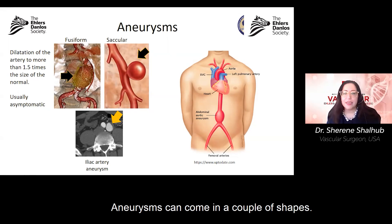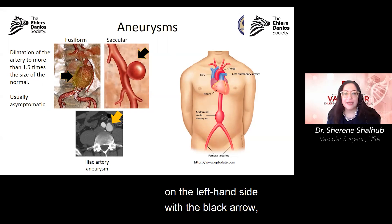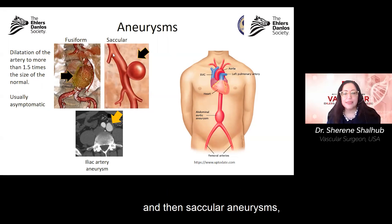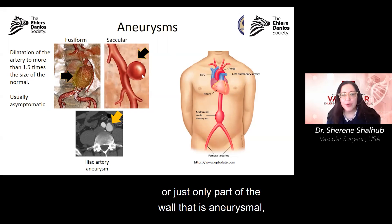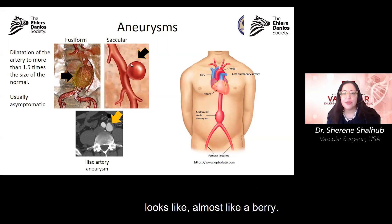Aneurysms can come in a couple of shapes. One is a fusiform, as you can see on the left-hand side with the black arrow, and then saccular aneurysms, in which only part of the wall is aneurysmal — it looks almost like a berry.